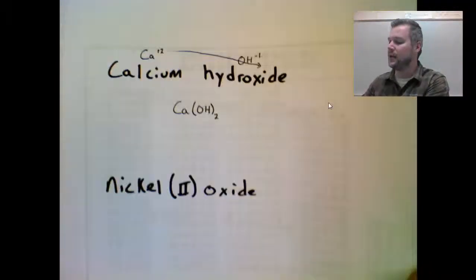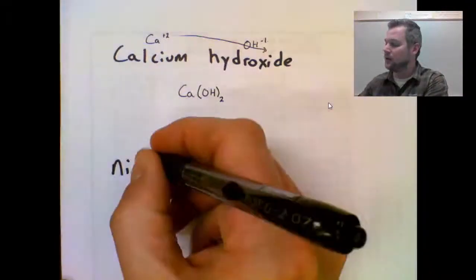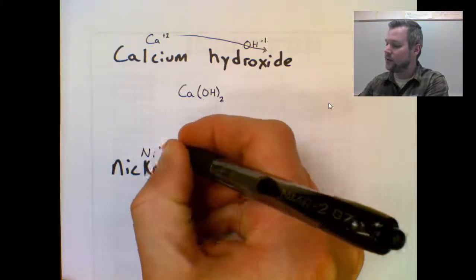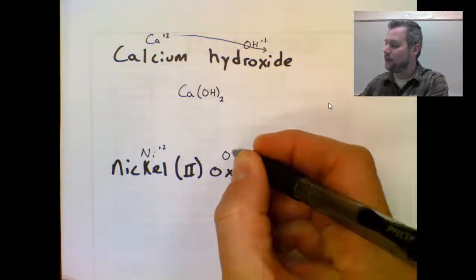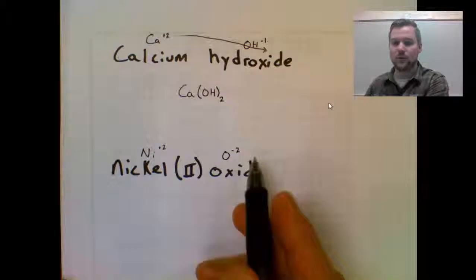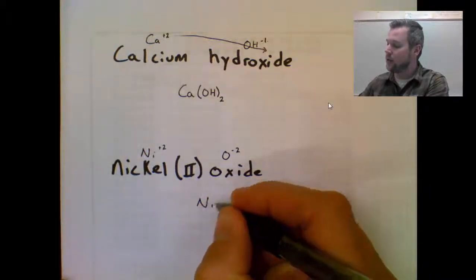Nickel two oxide. Because it's nickel two, I know it's Ni plus two. Oxide is O minus two. Plus two, minus two cancel, so it's just NiO.